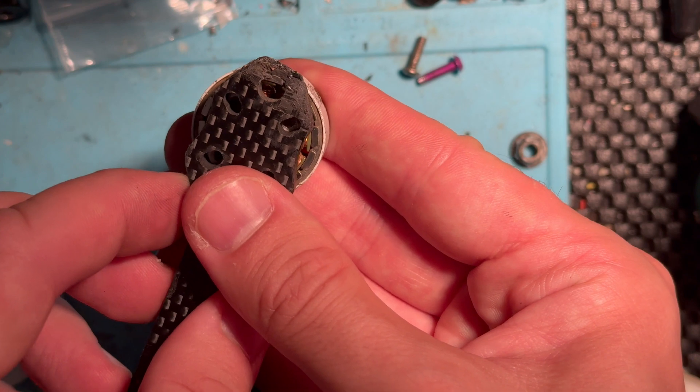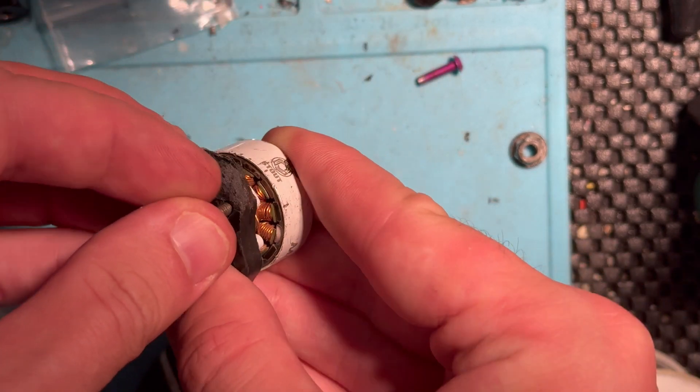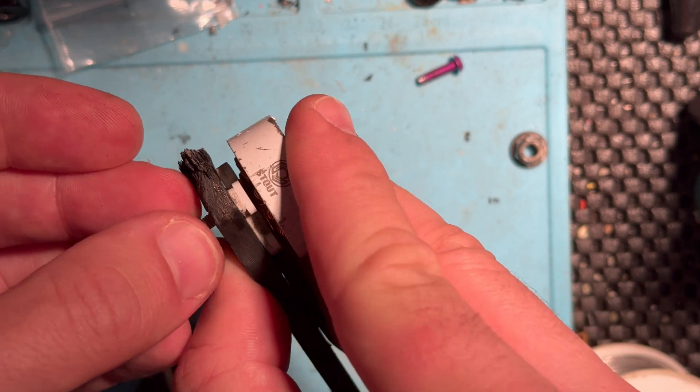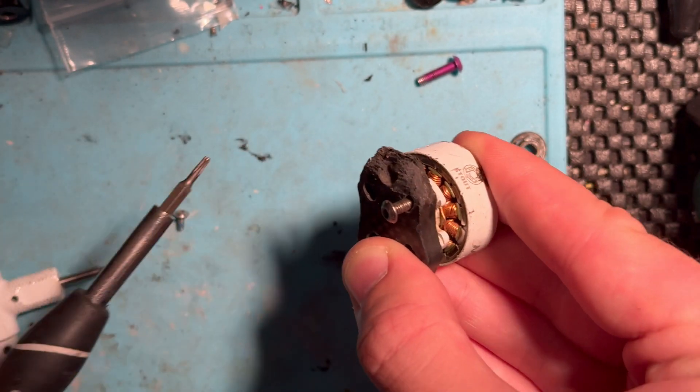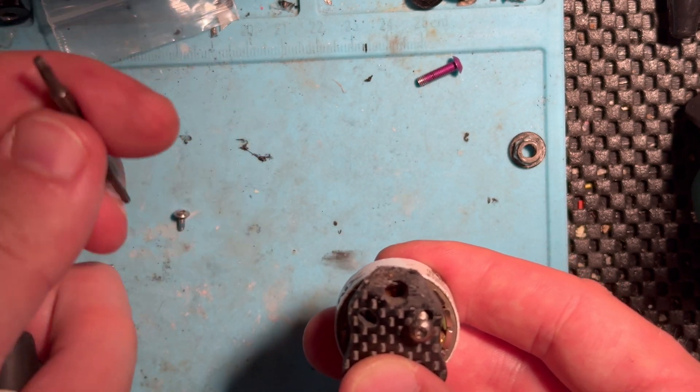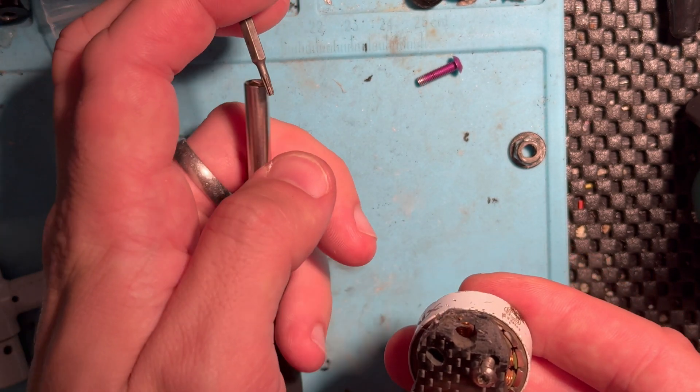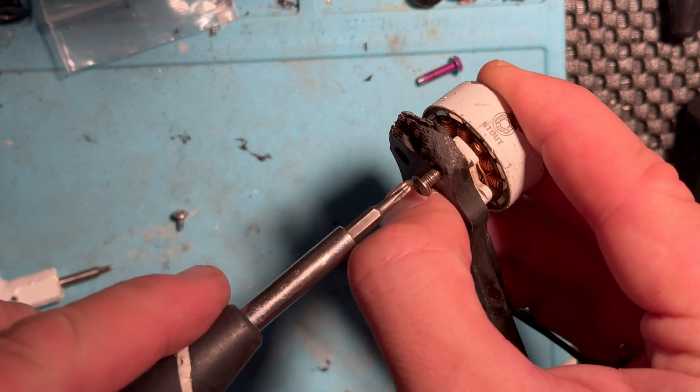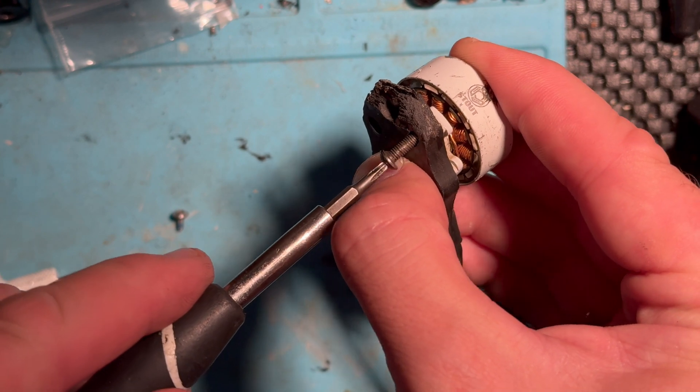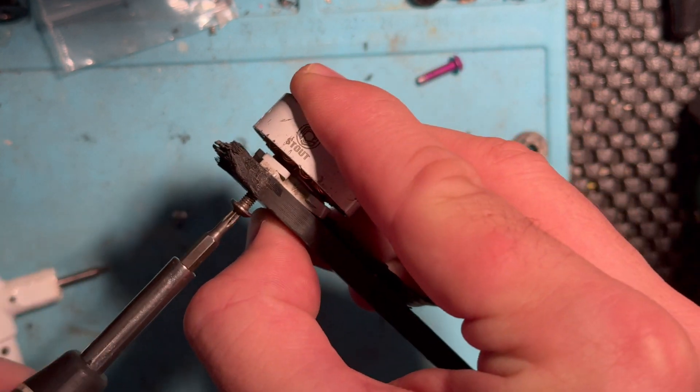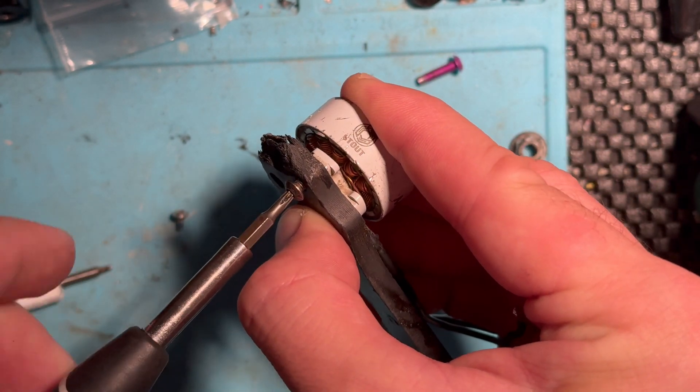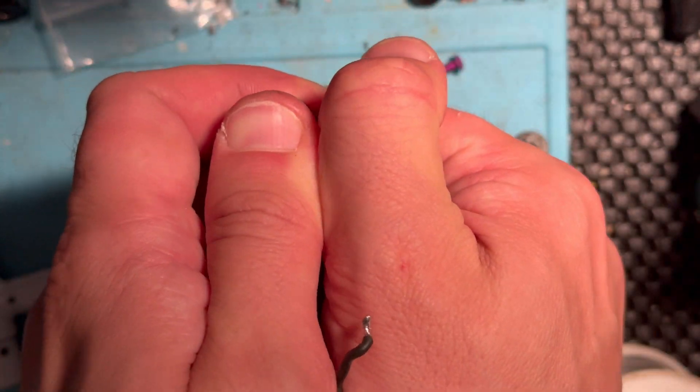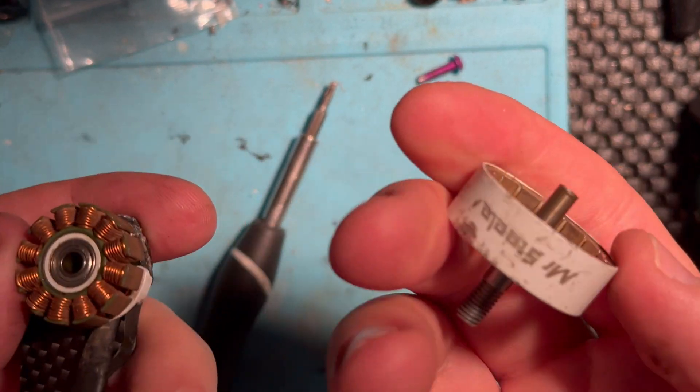But a little trick is you undo the bell screw. And then you put the motor back on. I'm going to do this one-handed. Just screw it back on. And then at least you can get a little extra leverage to separate the two.